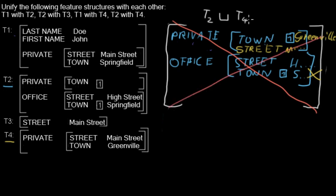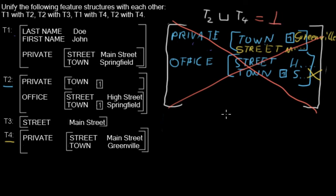Because we have a conflict, we can't unify those inner feature structures with each other, which means we can't unify the whole feature structures t2 and t4. If we unify them, we get an invalid or not-possible feature structure, symbolized with a special symbol. So the unification of t2 and t4 is not possible.